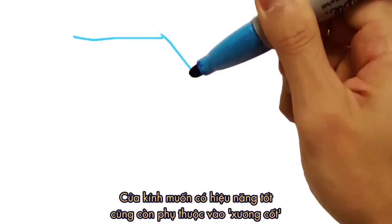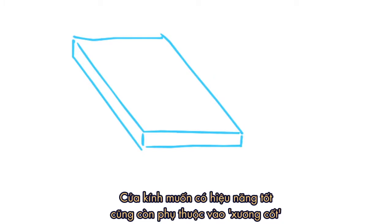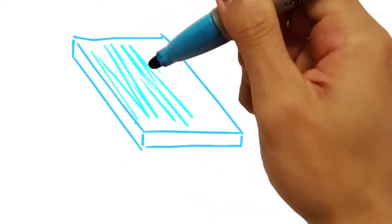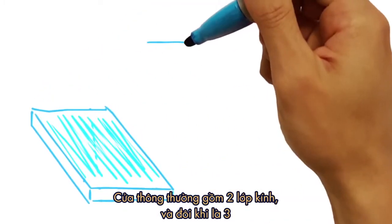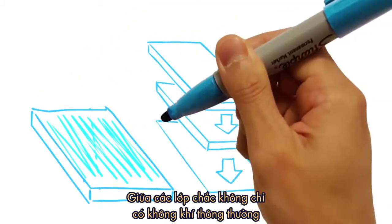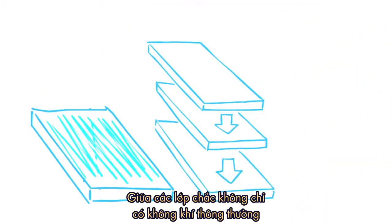Energy efficiency also has a lot to do with your window's anatomy, particularly the glass. Most windows feature two panes of glass, sometimes three. Inside those panes, there may be more than just air.